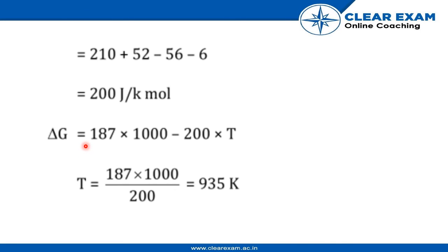187 into 1000 minus 200 into T. Solving this equation, we get T equals 935 Kelvin.